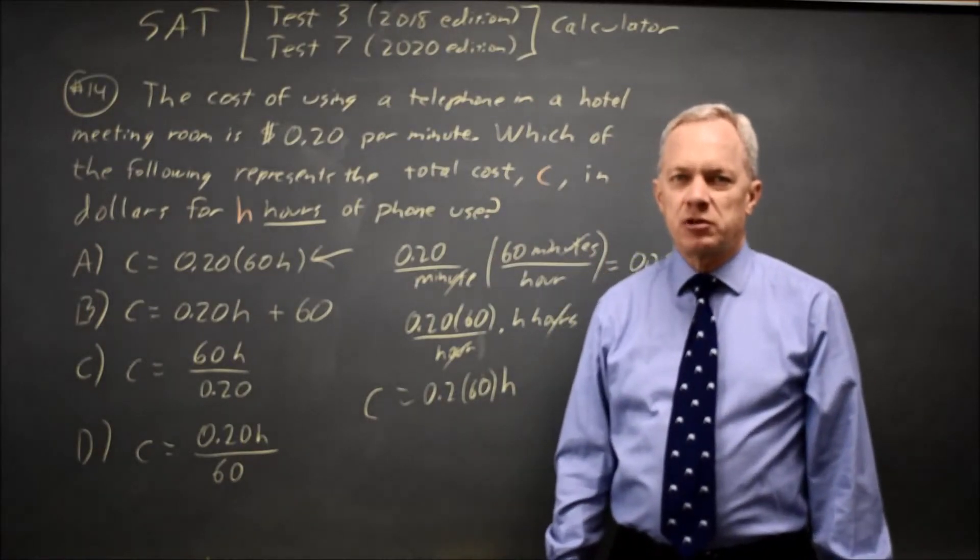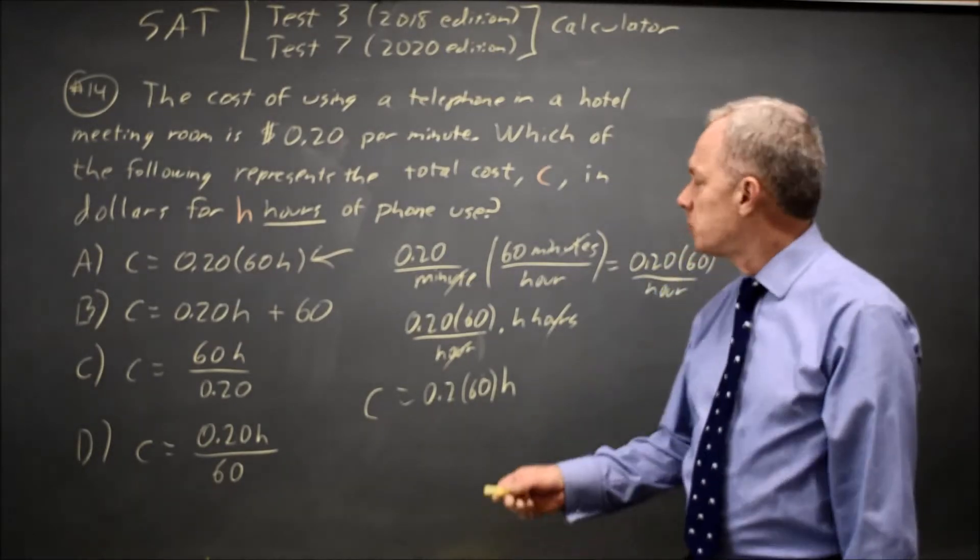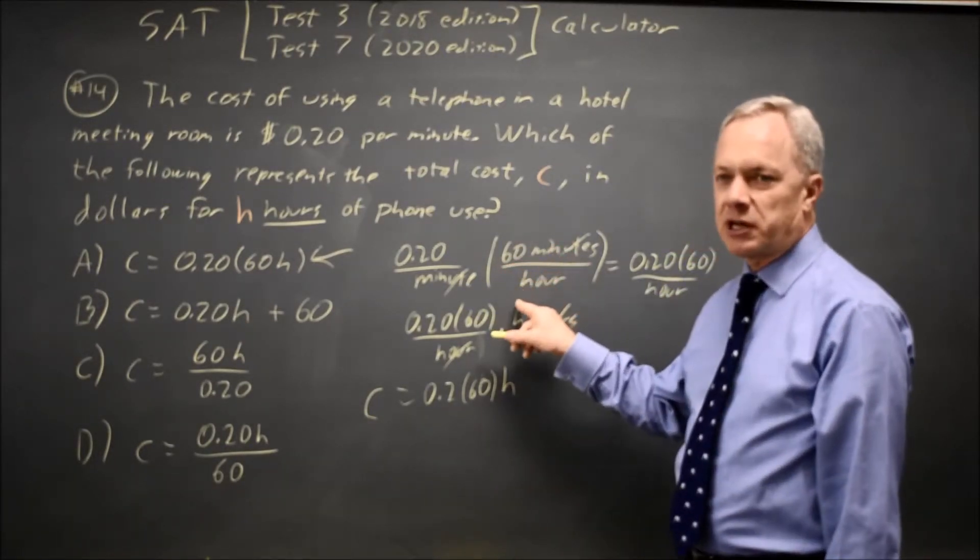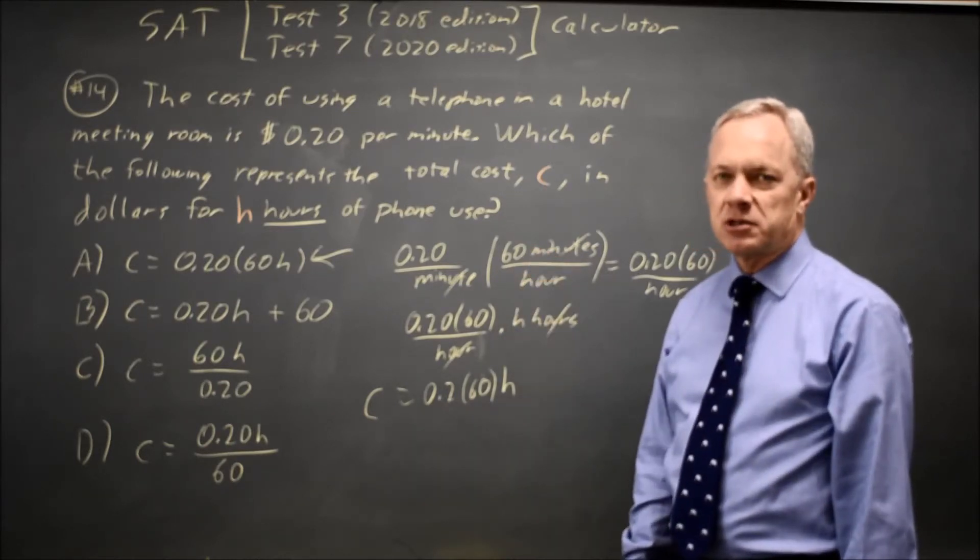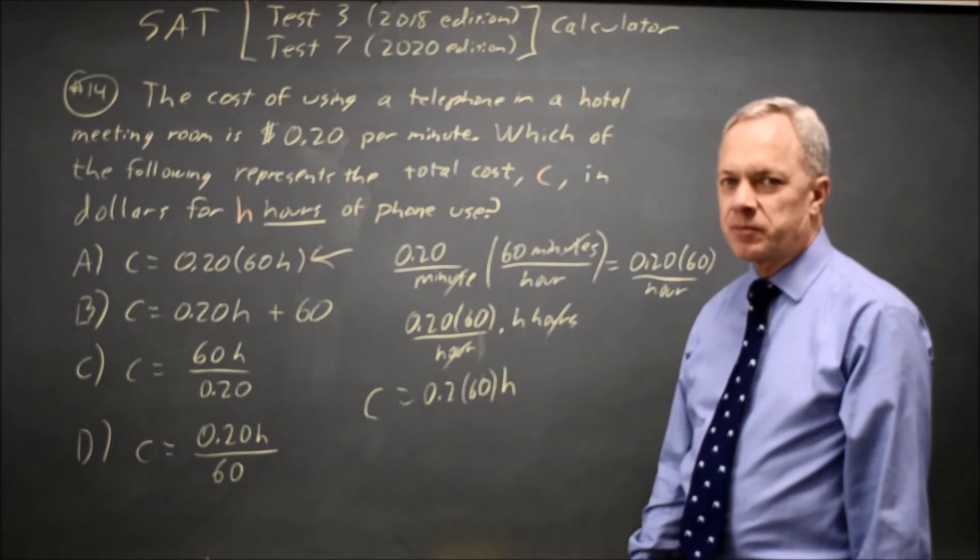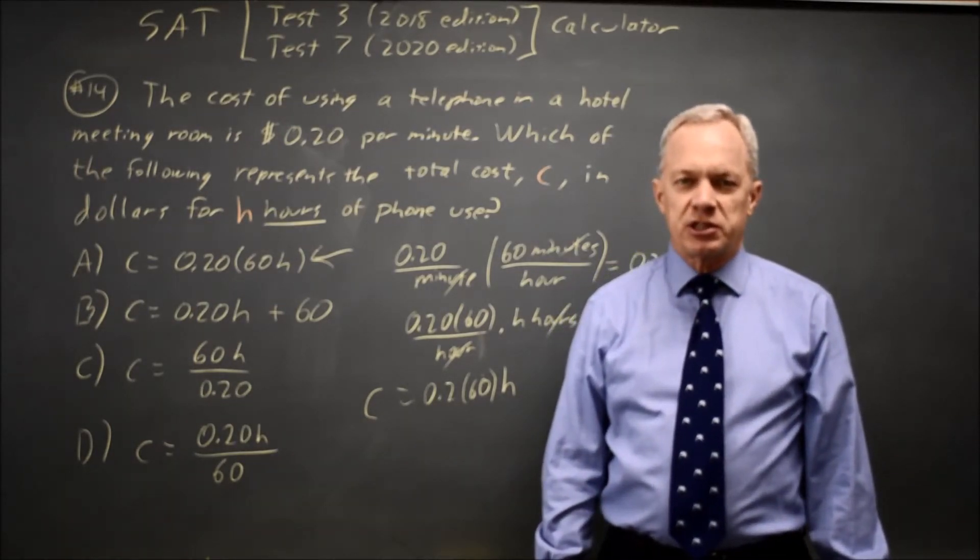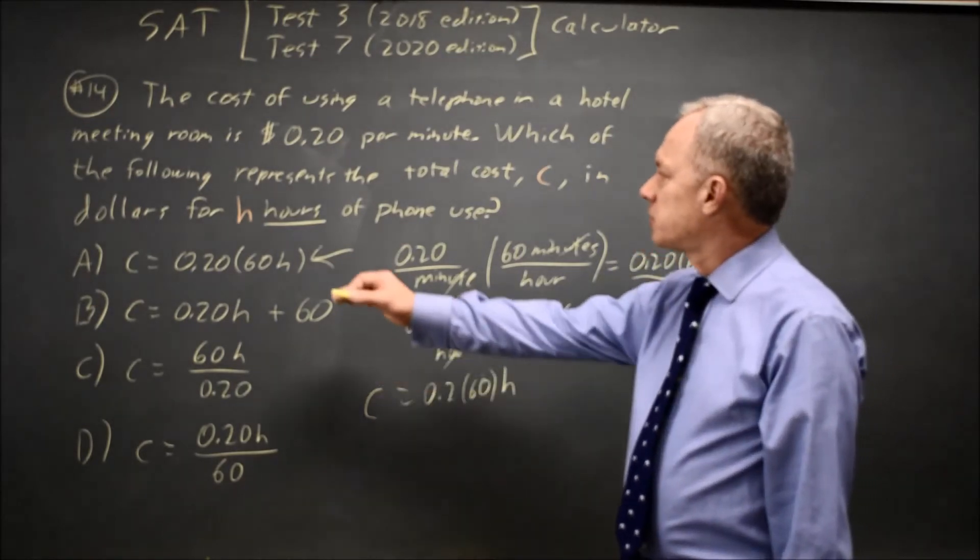Often, this method that we use to convert units frequently in our chemistry classes, where we multiply by an expression that is equal to 1. Since 60 minutes equals 1 hour, 60 times minutes over the number of hours is multiplied by 1. I've found that this is useful for the units conversion question on the SAT, and you will get one or more of them on your SAT.